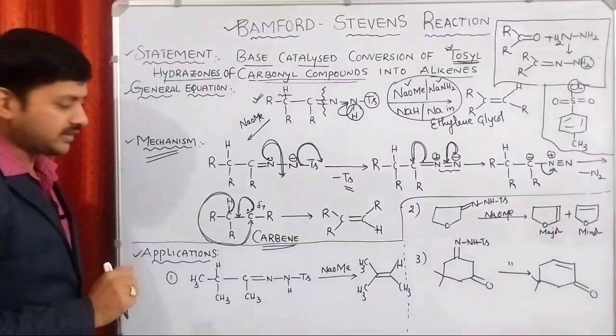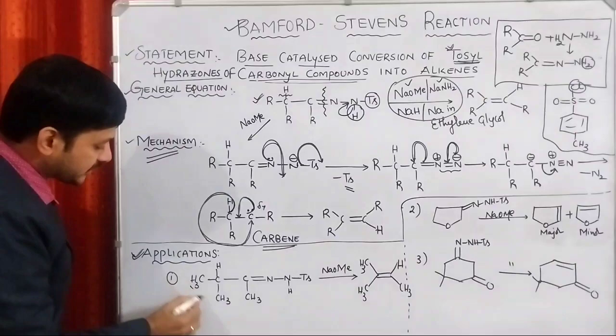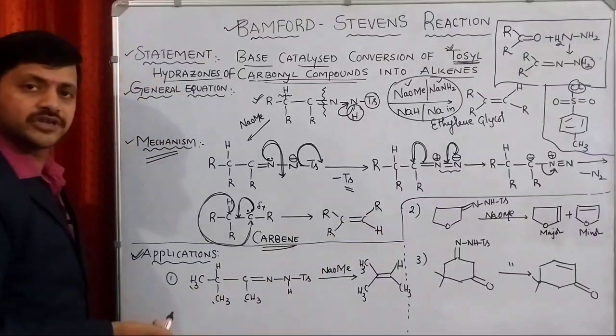The first example in which we are observing the R groups are replaced with methyl groups. See, methyl, methyl, methyl. Then in the final product, we are having three R groups. So three methyl groups and proton. In the second example, it is one of the important examples.